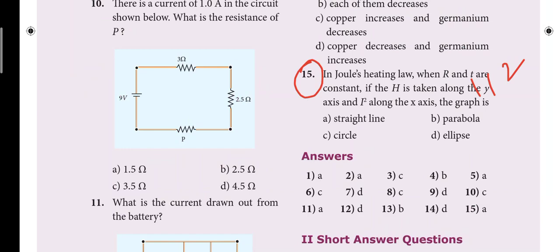Next second lesson, current electricity. So on the 15th one word, in Joules law of heating when R and T are constant. So that's 112 page. So in the one word, second lesson, current electricity, 15th one word.